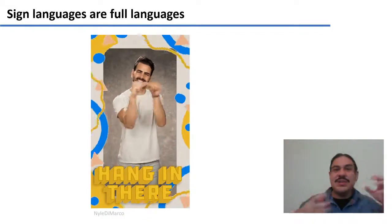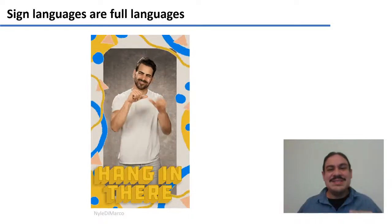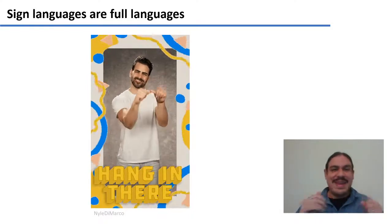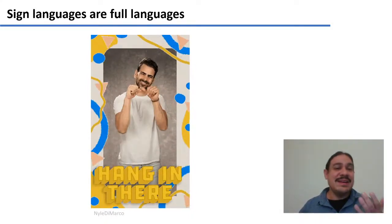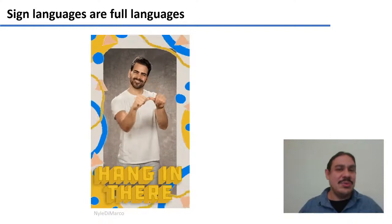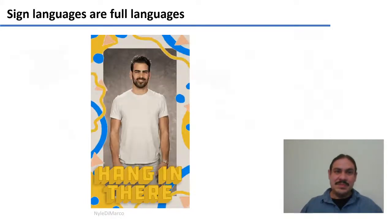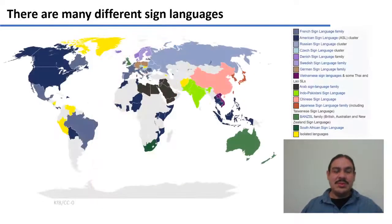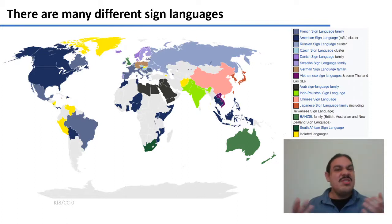They can always generate new sentences and express new ideas — for example, 'hang in there' in American Sign Language, also called ASL. Not only are they fully generative and can express any idea, but there are also a lot of them — hundreds of them.